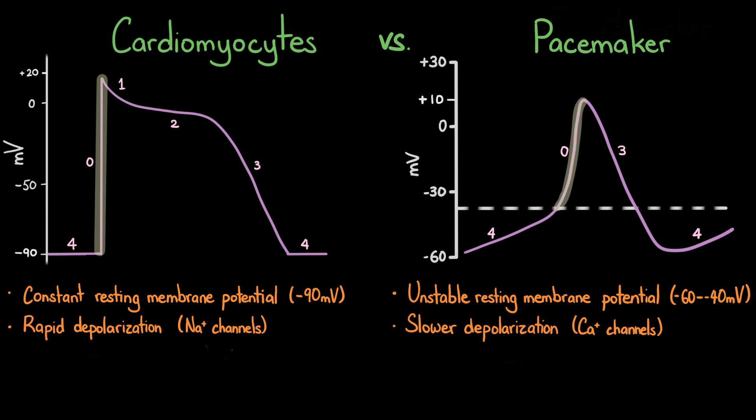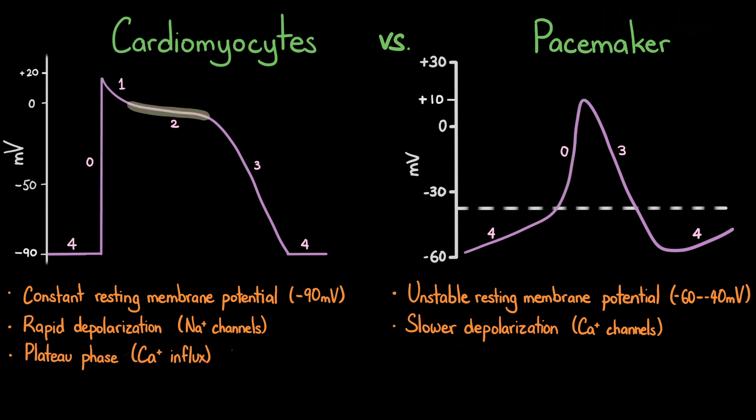Depolarization in pacemaker cells is a more gradual process because it depends on the opening of voltage-gated calcium channels, which are slower to activate. Finally, in contractile cardiomyocytes there is a plateau phase during which calcium voltage-gated channels open to allow calcium ions into the cell. This influx of calcium ions eventually leads to the contraction of the heart. There is no plateau phase in pacemaker cells, and so repolarization happens in one stroke.